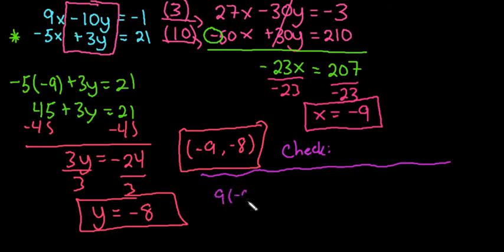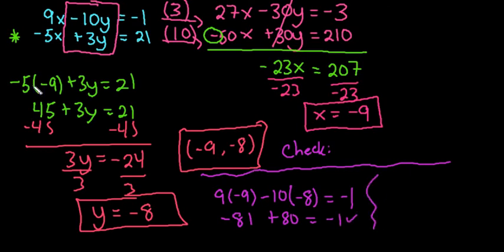So if we check this, basically what we're going to do is replace our x with negative 9. So I would have 9 times negative 9 minus 10 times negative 8 equals negative 1. And so we would simplify this. This gives me negative 81 plus 80, which is indeed negative 1. So we can see that it works in the first equation.